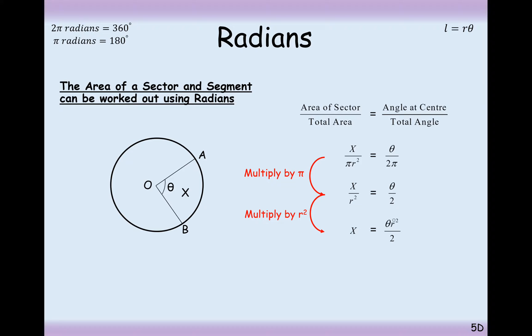The formula is theta r squared divided by 2. So it's going to be your angle theta, your radius needs to be squared, and it's going to be divided by 2. We can also write this as a half r squared theta.